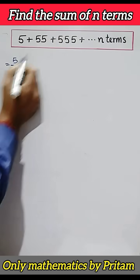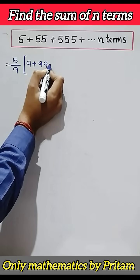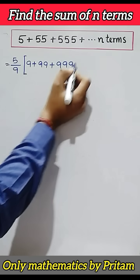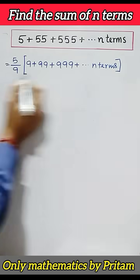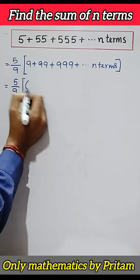Before we take 5 as common, divide each term by 9 and multiply by 9 also. So 9 plus 99 plus 999 up to n terms. Now 5 by 9. This 9 can be written as 10 minus 1.